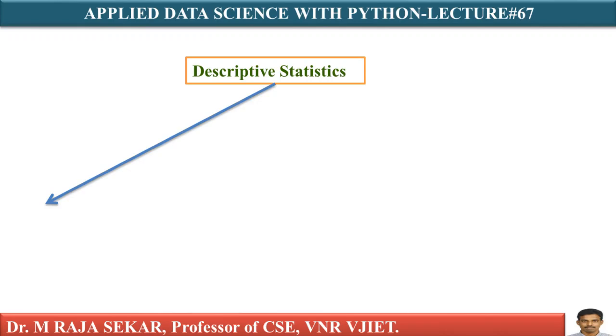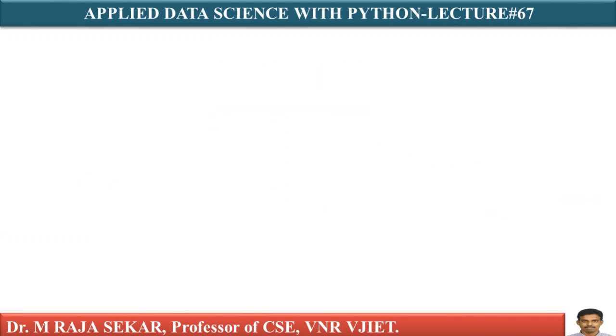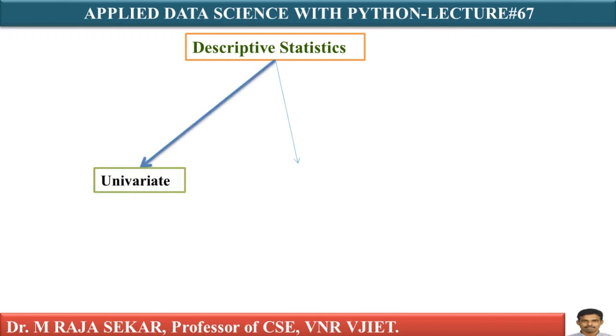We know that descriptive statistics can be categorized into three broad categories based on how many variables we are looking to summarize. They are univariate, bivariate and multivariate. Let's take a look at univariate descriptive statistics.